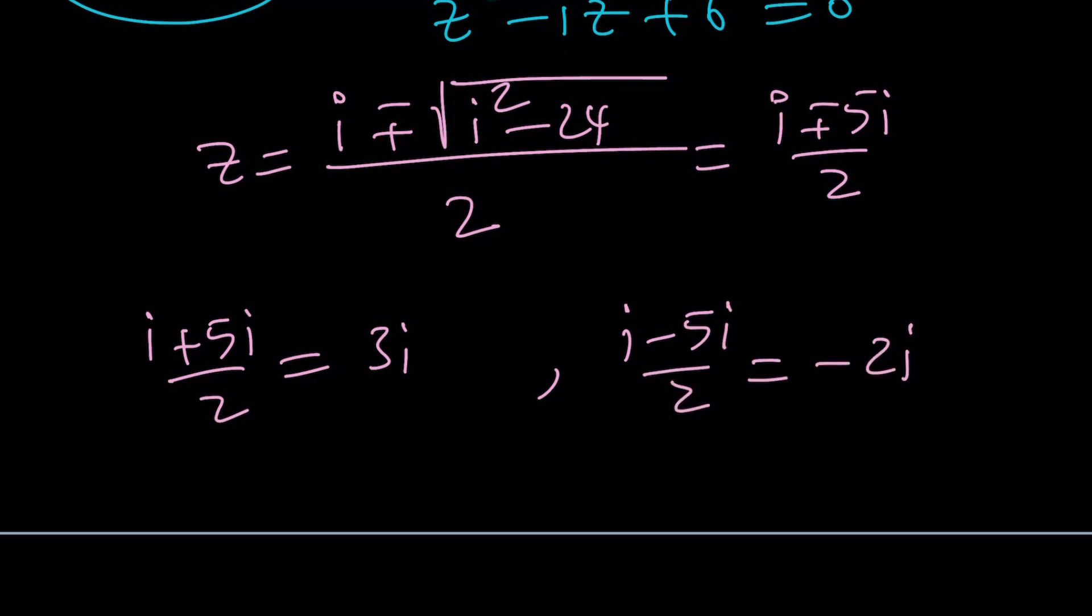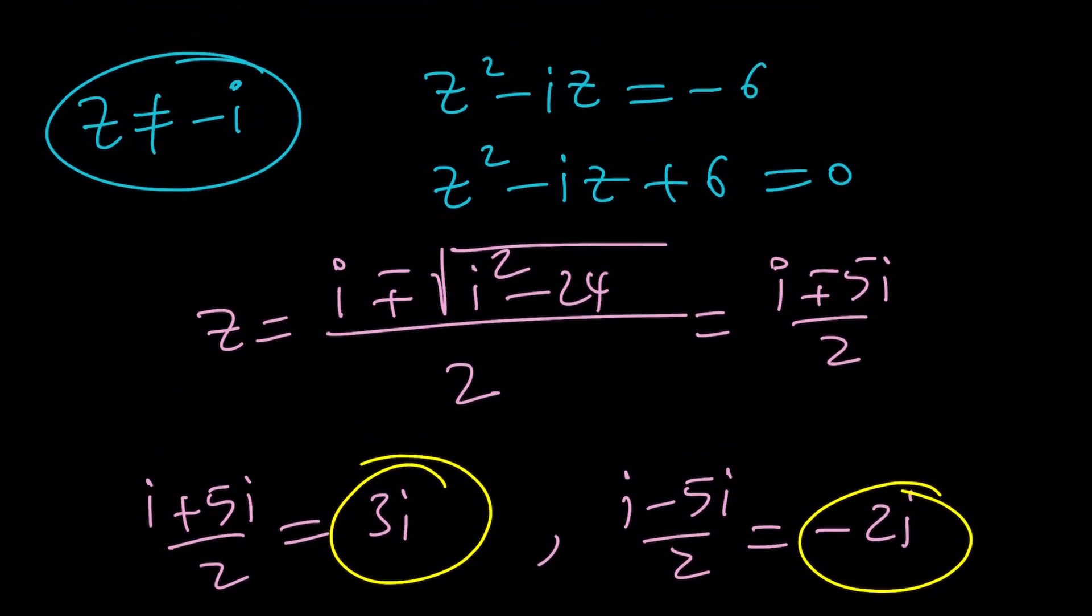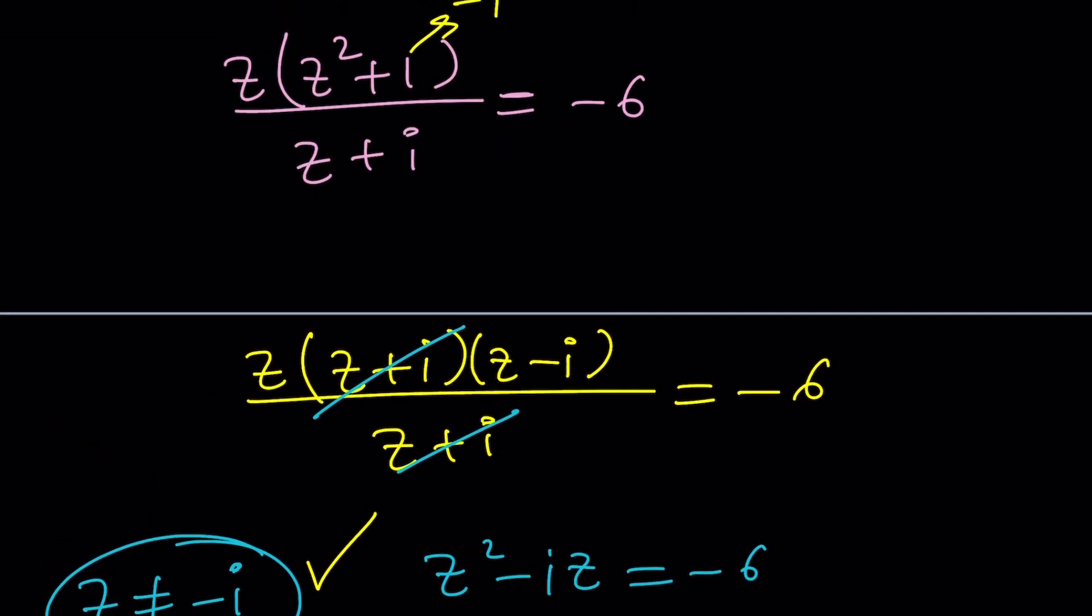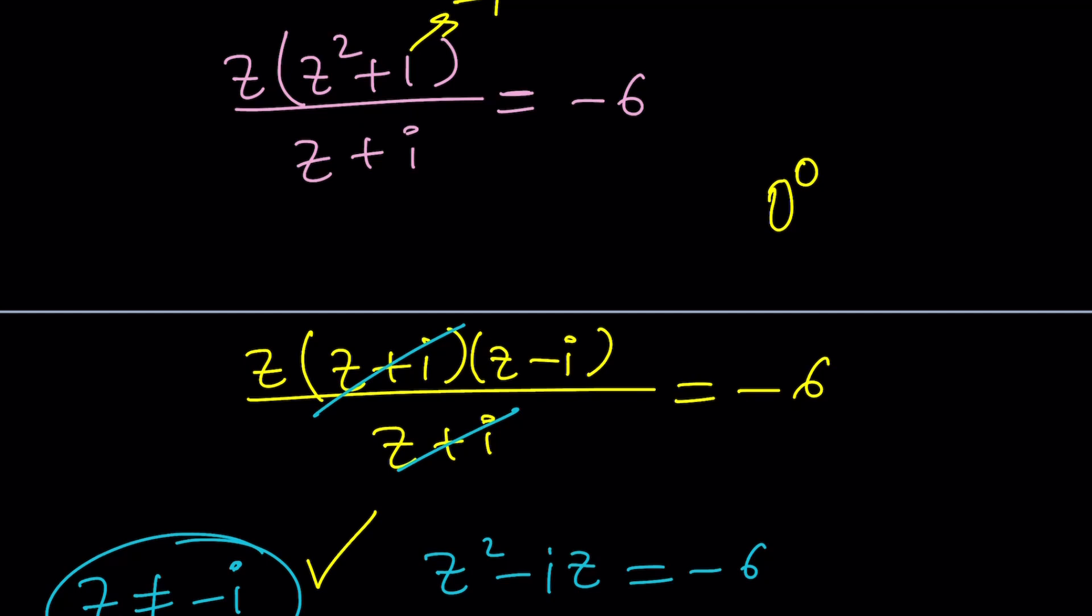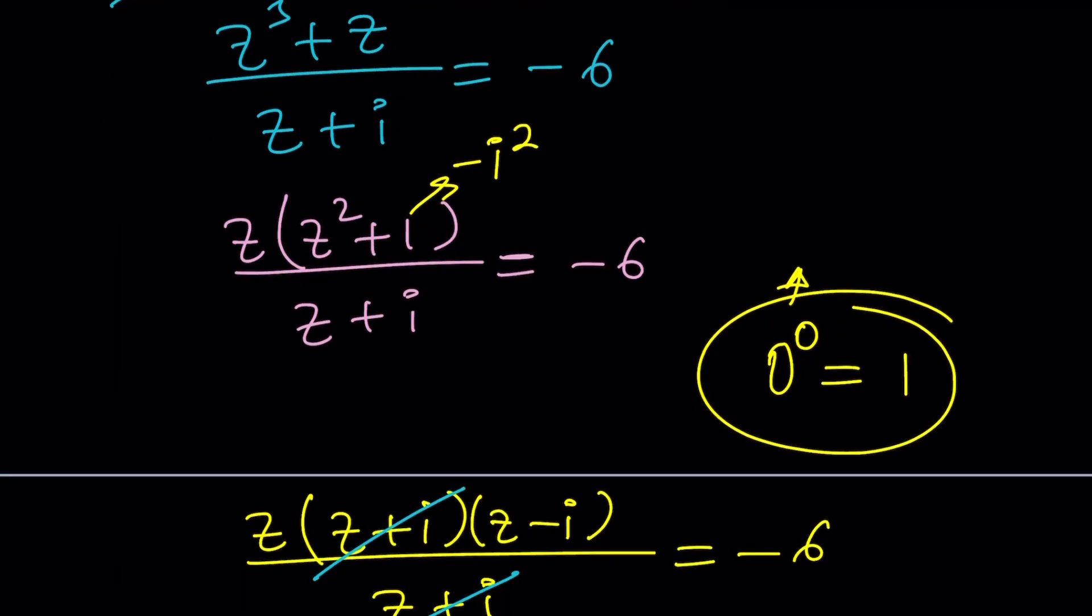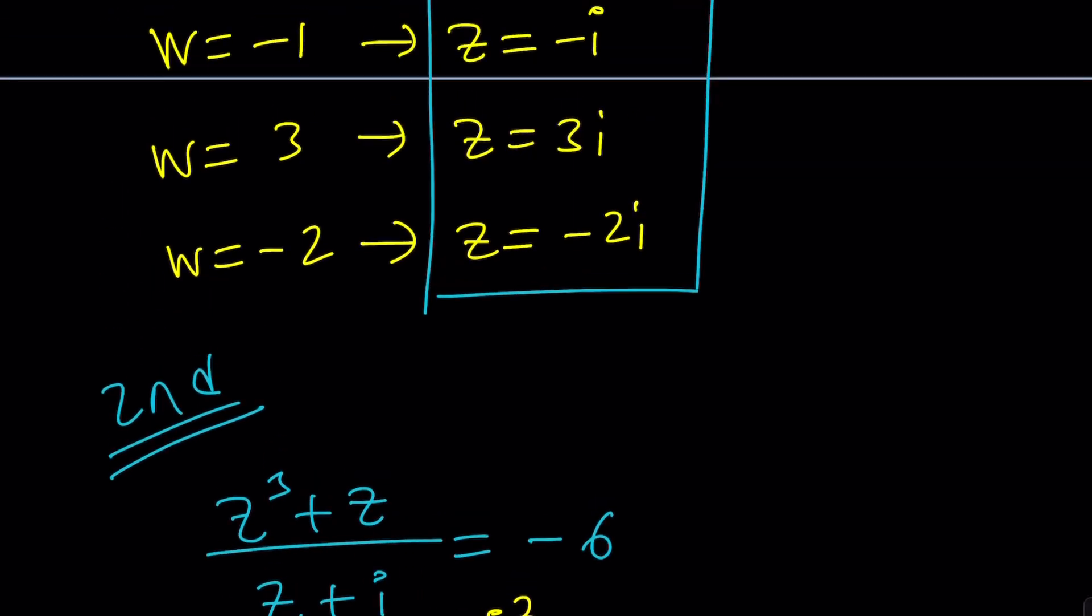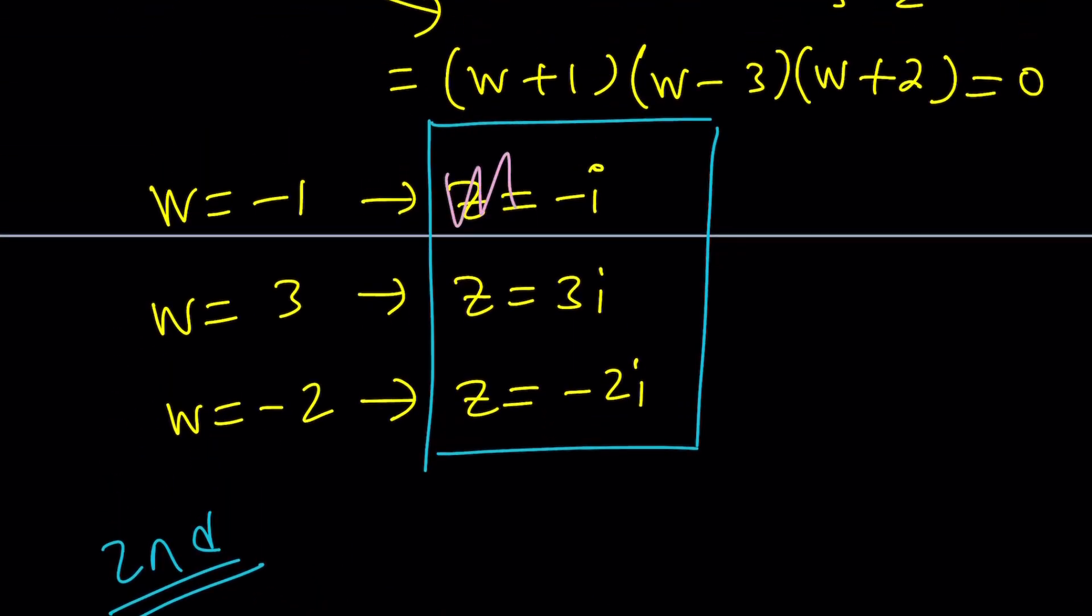So, it looks like we found the same solutions as before with one problem. This condition tells us Z cannot equal negative I. Is that the case? Of course, because then you'll have 0 over 0. That's undefined. I mean, we agree 0 to the power of 0. We don't agree on that, on the fact that it's equal to 1. And I made a separate video about it, by the way. In this case, if you take a good look, you're going to realize Z equals negative I is not going to work. So, I have to go back to the first method and scratch this out so we end up with two solutions.